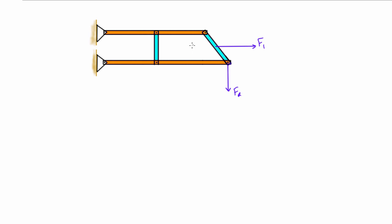Frames and machines are structures that contain at least one non-straight member or they have a multi-force member which has more than two forces acting on it.